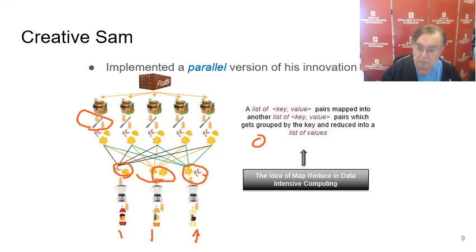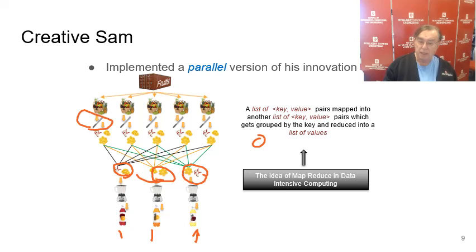So you map a list of key-value pairs into another list of key-value pairs, you group them by the key, and you reduce them to a list of values. This is the key concept in MapReduce.